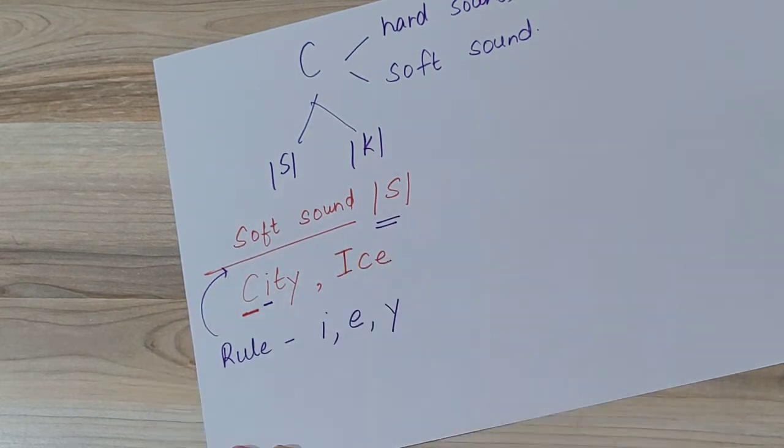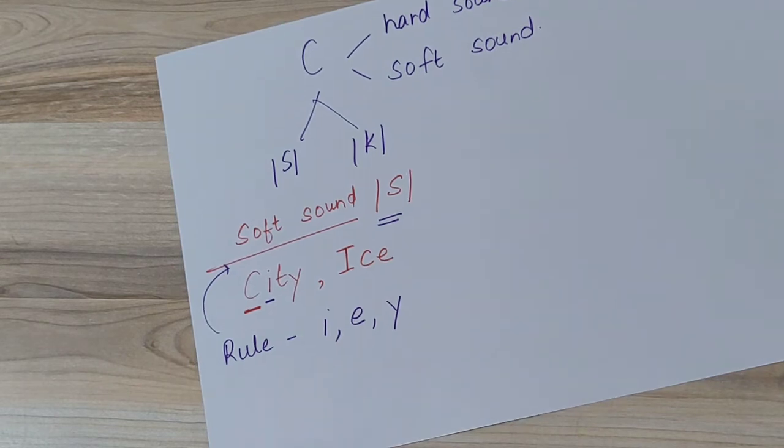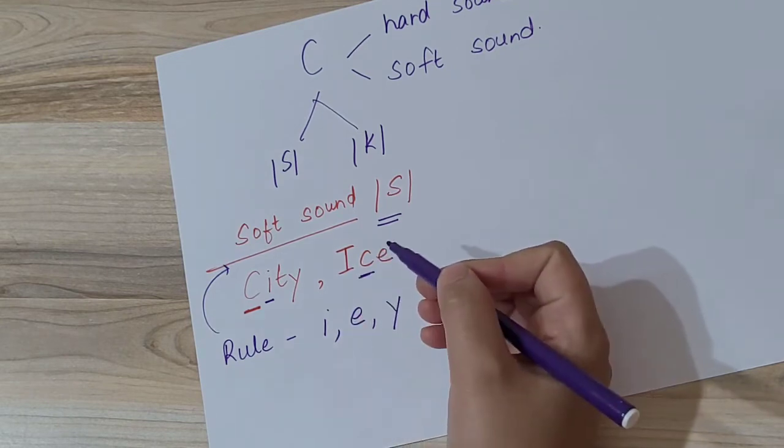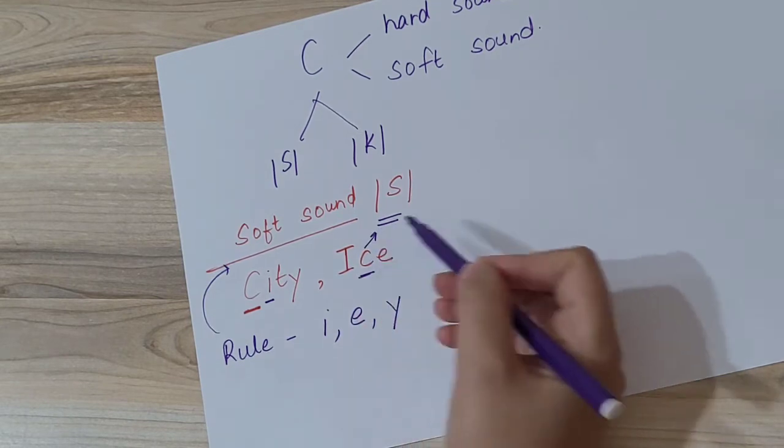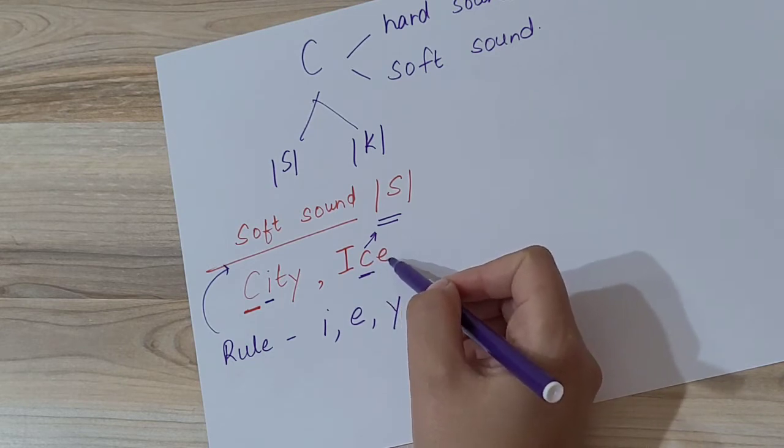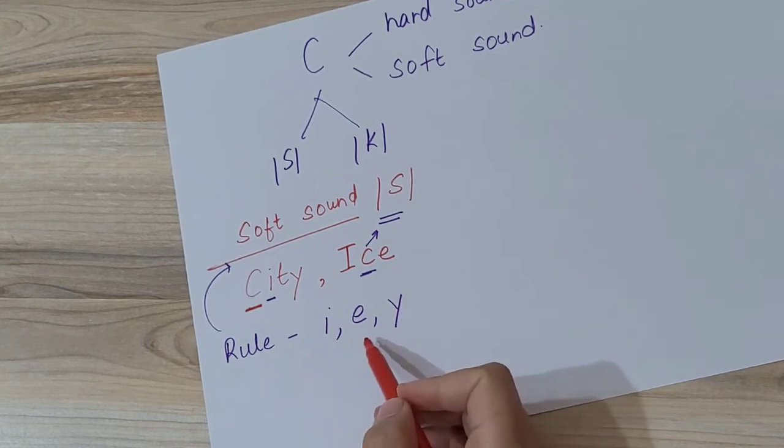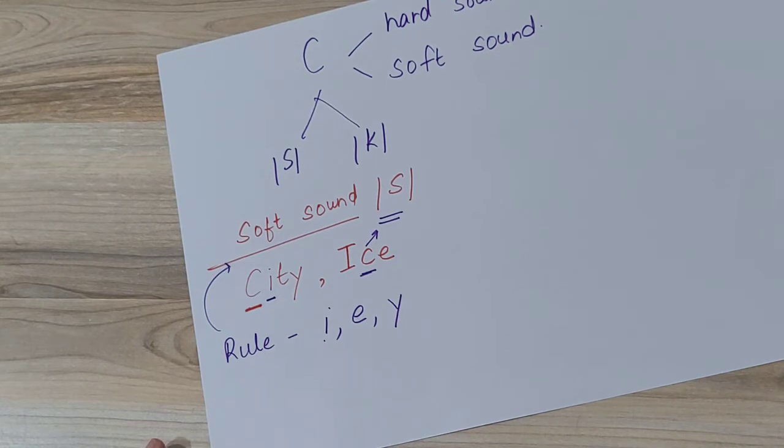Similarly, we have one more word: Ice. Here we are pronouncing letter C as soft sound, that is 'sa', because C ke baad E hai. And what rule we have learned: if C is followed by I, E, or Y, then we pronounce C's soft sound, that is 'sa'.